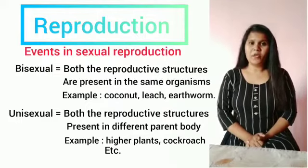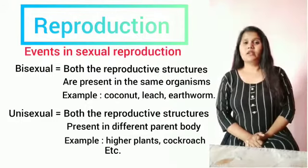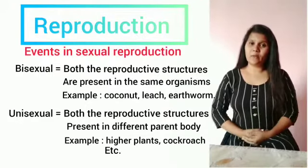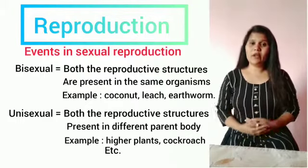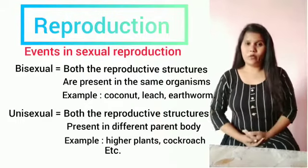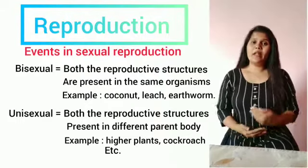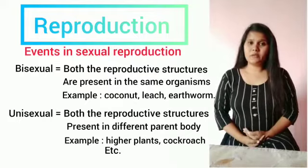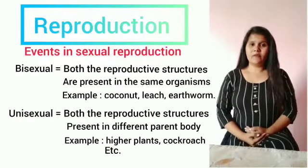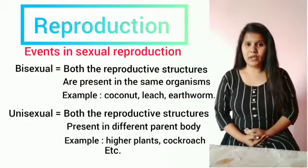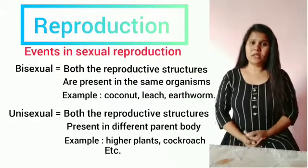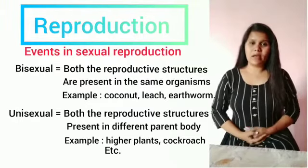Coming to unisexual animals, where the reproductive structures are present in different parent bodies — the female reproductive structure is present in the female parent body and the male reproductive structure is present in the male body. For example, unisexual animals include cockroach, humans, and many other animals.